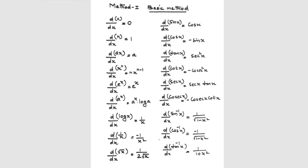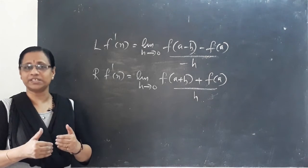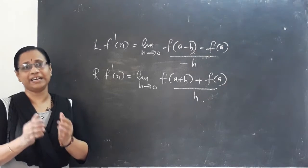The derivative of a constant is 0. The derivative of x raised to n is n times x raised to n minus 1. These are the standard results used in problems. The first principle is to verify these results using the product and derivative rules.